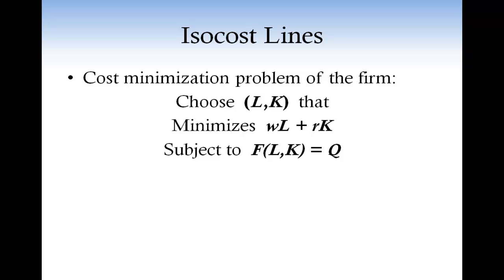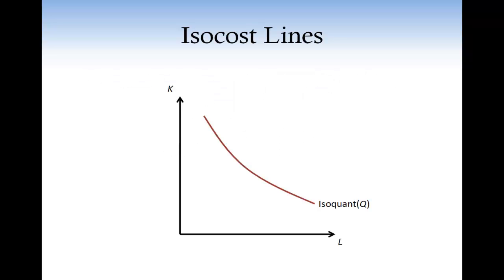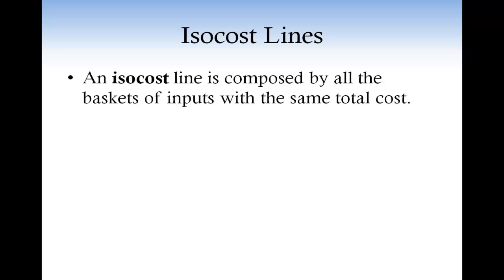The firm considers all the baskets of inputs on the isoquant corresponding to Q units of output — for example, the baskets of inputs A, B, and C — and then chooses the basket on the isoquant that costs the least.